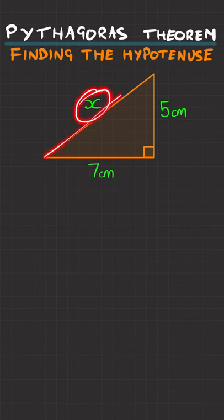How to find the hypotenuse, which is this side, because it's the longest side, using Pythagoras' theorem. Firstly, let's write up the theorem, which is a squared plus b squared equals c squared.